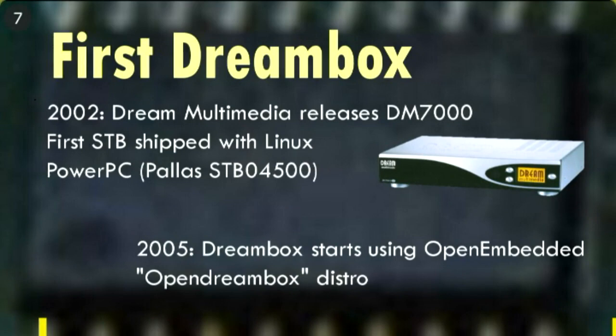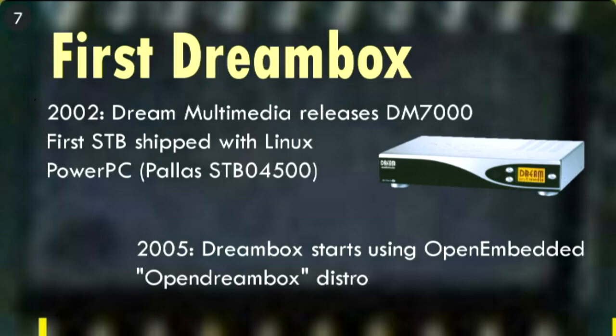It has a PowerPC SoC (system on a chip) with MPEG decoders necessary to decode DVB video — specifically a Pallas STB or O4500 for the set-top box market. There were a few more models, including ones that could record to hard disk — the personal video recorder approach. In 2005, Dreambox first used OpenEmbedded, which is still very important in the embedded Linux field. We have our OpenDreambox distribution, which is a bit Debian-ish — it started with IPKG packages and now uses Debian packages.